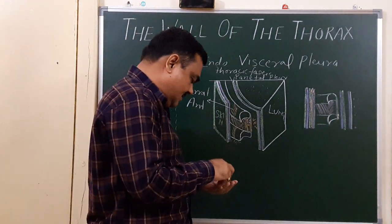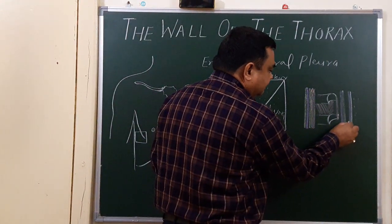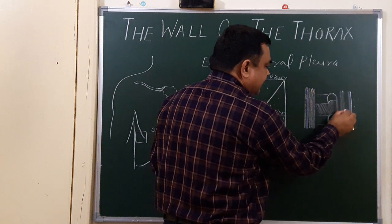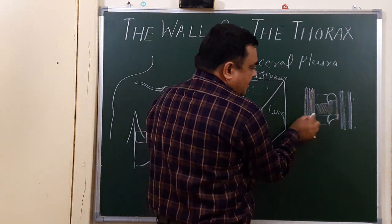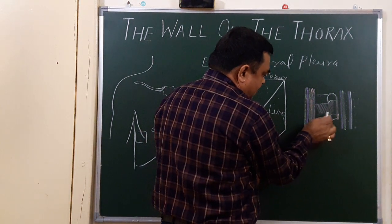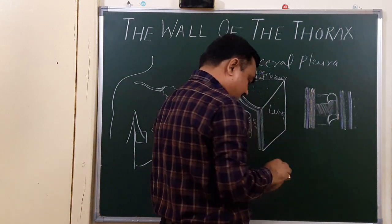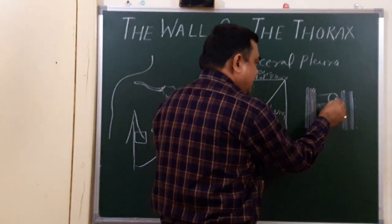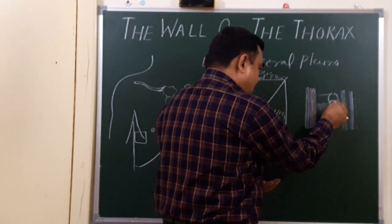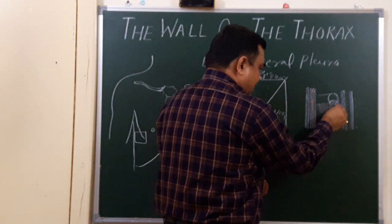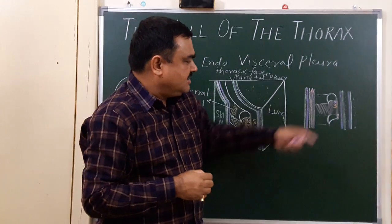In case of pleural effusion, pleural fluid is collected in the pleural space. To drain it, a needle is inserted which passes through the lower part of the intercostal space, because in the upper part of the space there is the vein, artery, and nerve — the neurovascular bundle.